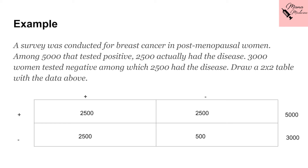Moving on, the 2500 in the second column, first row is false positive, because our test told us that these 2500 patients are positive and have the disease, but they don't actually have the disease — the negative sign on top of that second column tells us the reality. So that negative sign is telling us that our test is wrong; this is not the actual value. So we write false positive. And finally, the 500 is the true negative. As our test told us 3000 tested negative, only 500 were actually negative according to reality. So those 500 people were the true negative.